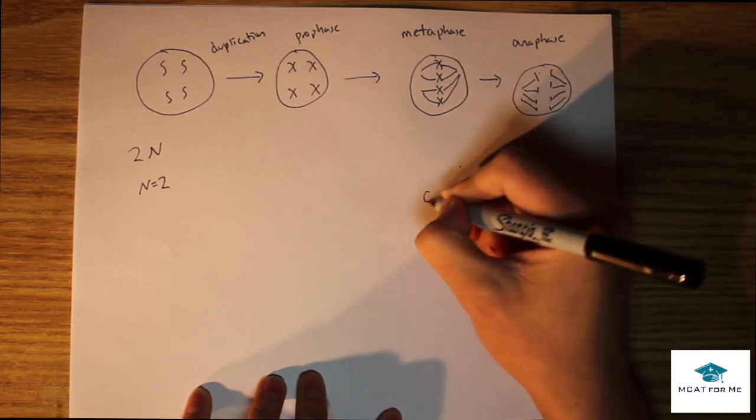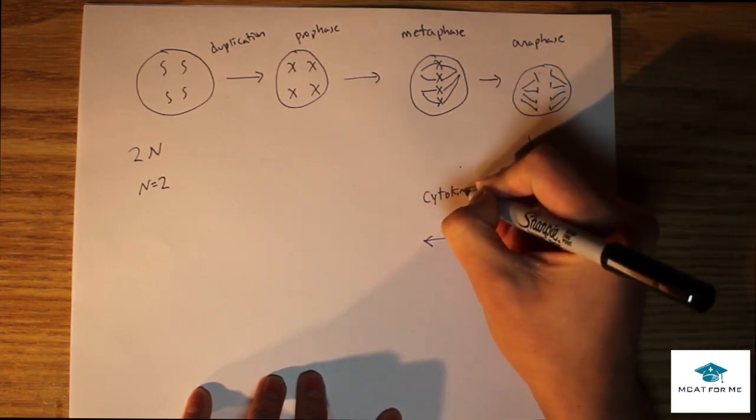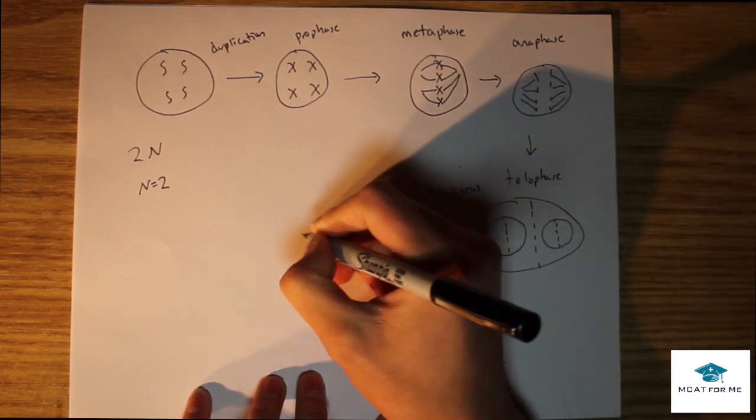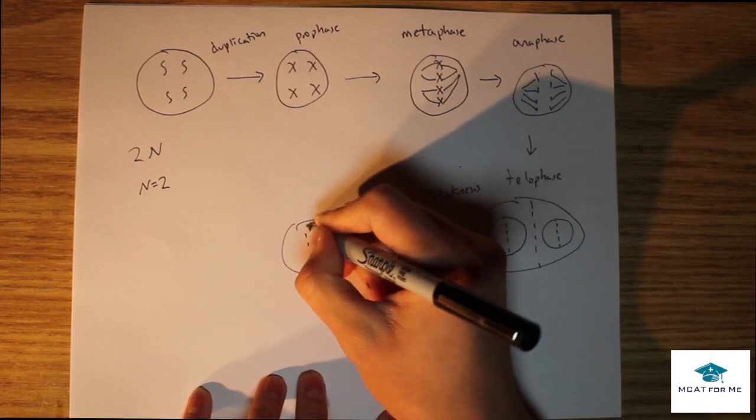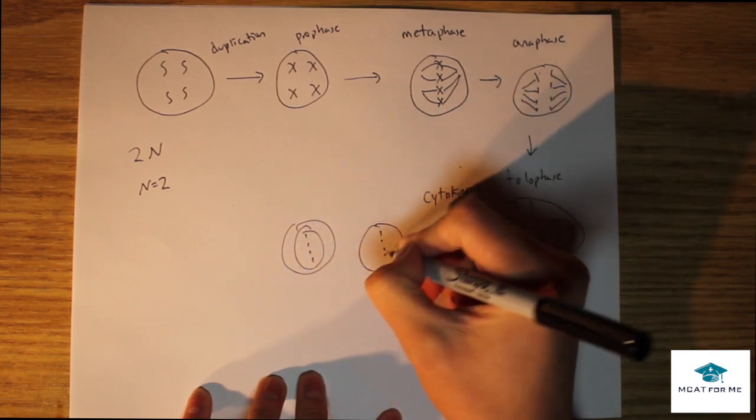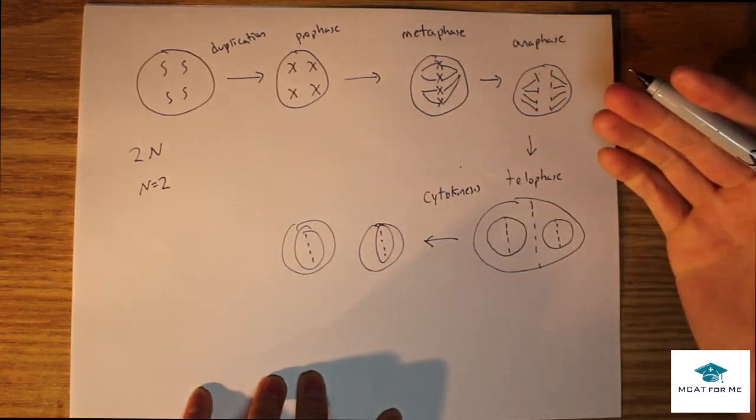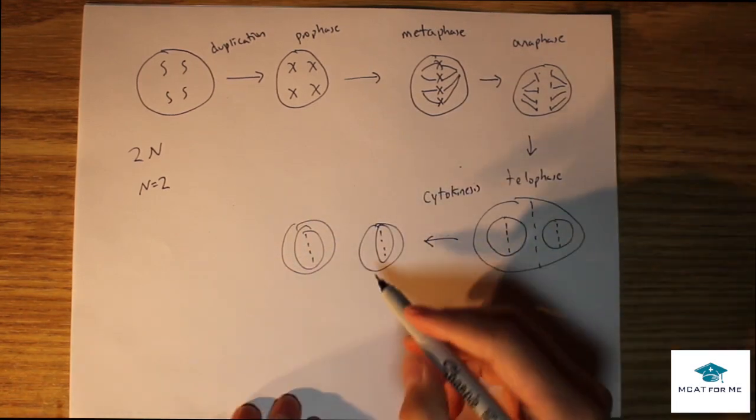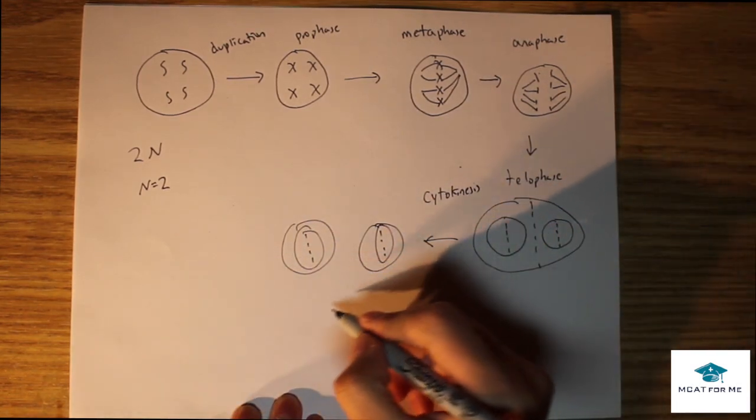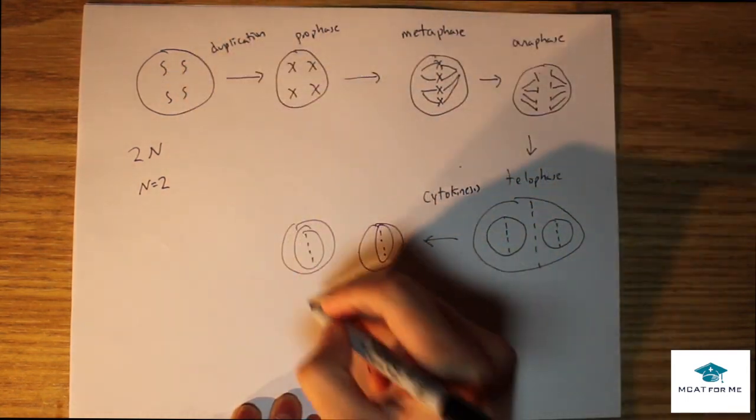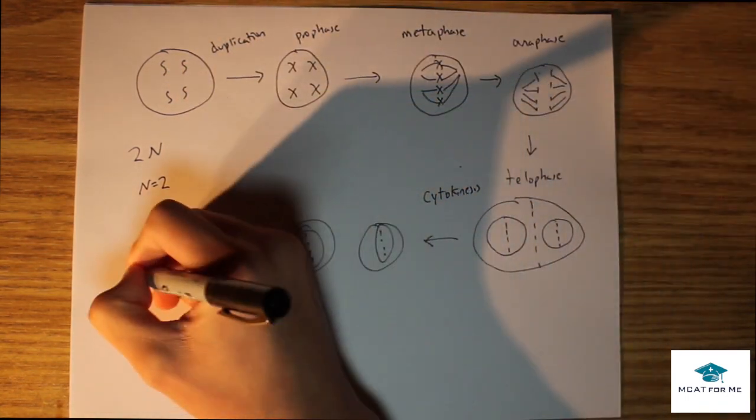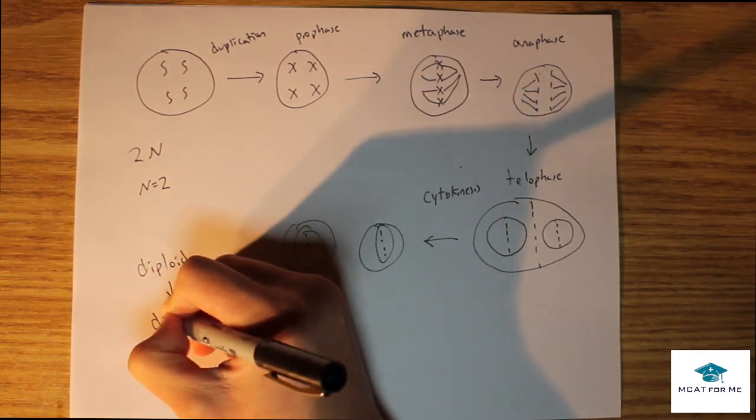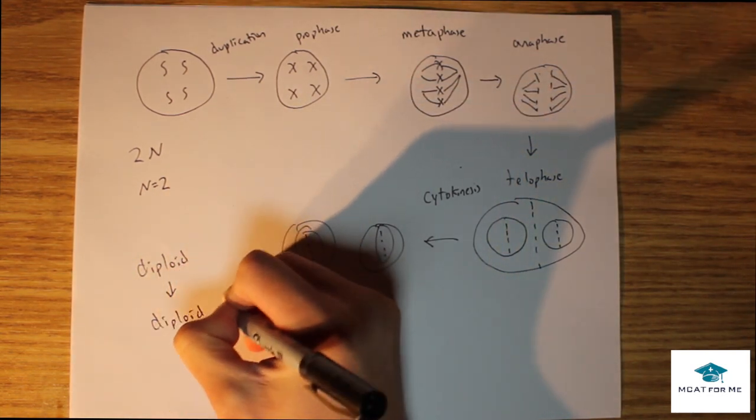Finally, we're going to have something called cytokinesis, which is actually the pinching. It's going to pinch down here. Now we're going to have two daughter cells that each have four chromosomes in there. At the end, we see that there's still those four chromosomes and still it's 2n. So it went from diploid back to diploid, and we got two of these diploid cells.